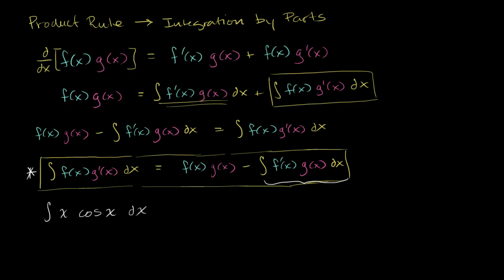So in this case, if we assign f of x to be equal to x, f prime of x is definitely simpler. f prime of x is equal to 1. If we assign g prime of x to be cosine of x, once again, if we take its antiderivative, that's sine of x. It's not any more complicated.